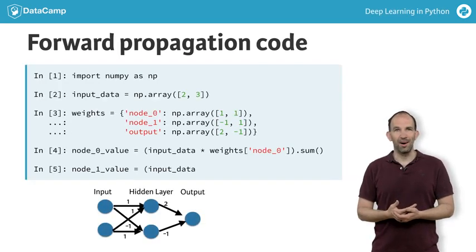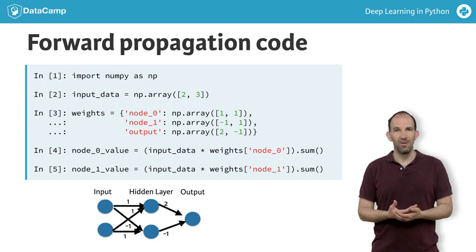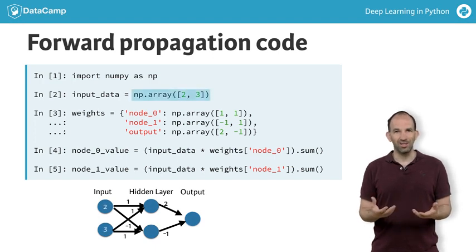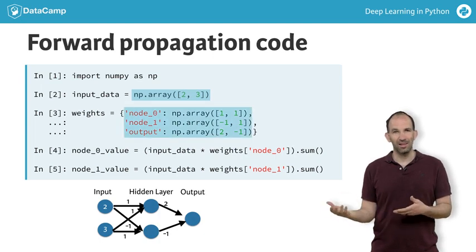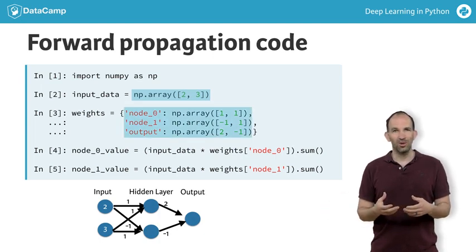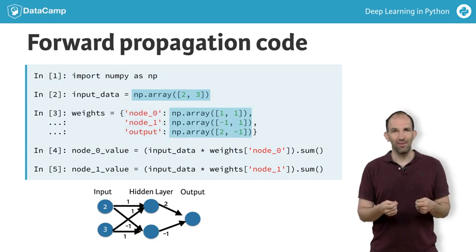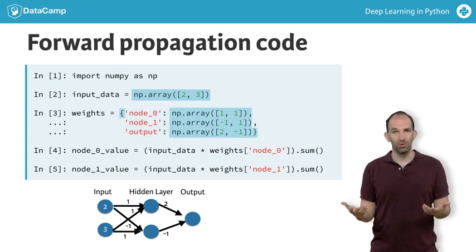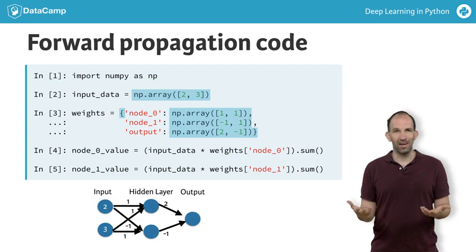First, we import NumPy for some mathematical operations. We've stored the input data as an array. We then have weights into each node in the hidden layer and to the output. We store the weights going into each node as an array, and we use a dictionary to store those arrays.